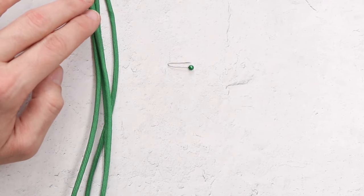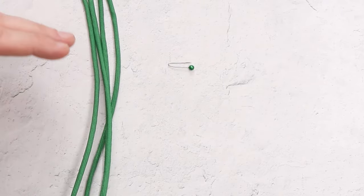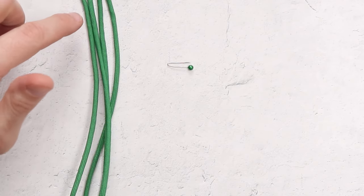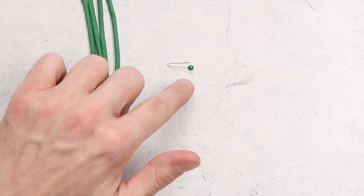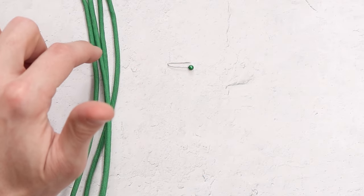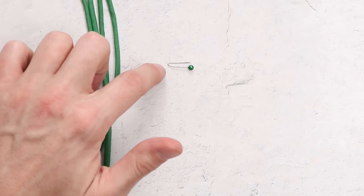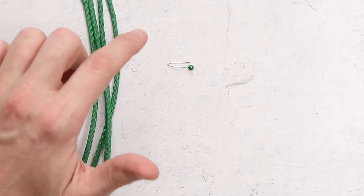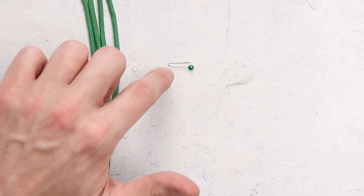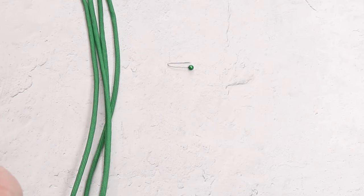For our project today, we are going to be using 550 paracord, and our color for this project will be kelly green. And you're also going to need something that you can attach the clover to, and you can either use a safety pin or an enamel pin, or in our case today, we're going to be using a push pin that we have folded in half.